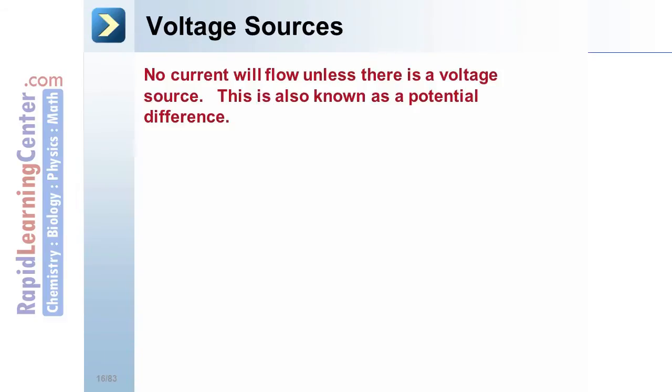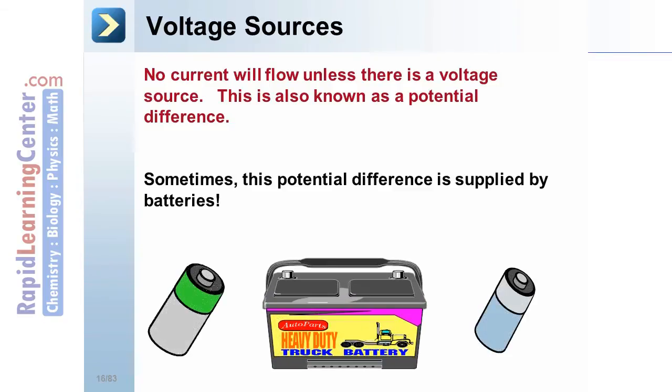Voltage sources. No current will flow unless there is a voltage source. This is also known as a potential difference. Sometimes, this potential difference is supplied by batteries. As we already mentioned, a direct current would flow.